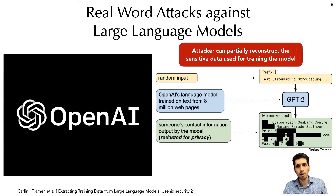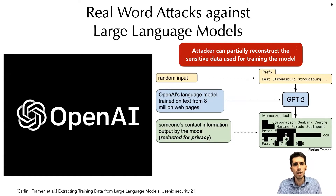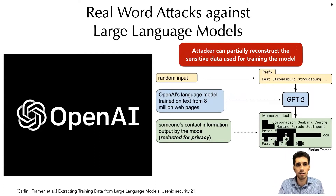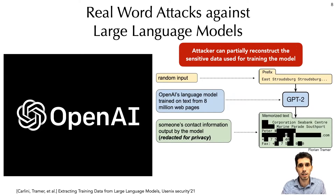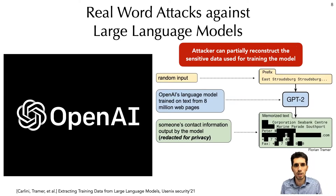Another example is the case of generative models, notably language models that generate text. An adversary can run similar inference attacks as in the MLaaS platforms, but this time to partially reconstruct text from the training data. What is important is that usually the atypical data, which are more sensitive, are more vulnerable to these attacks.